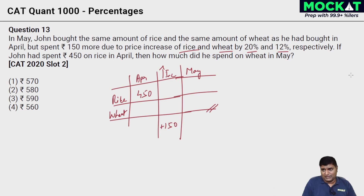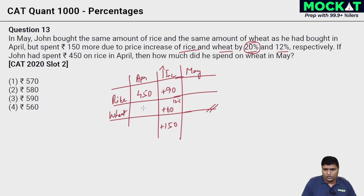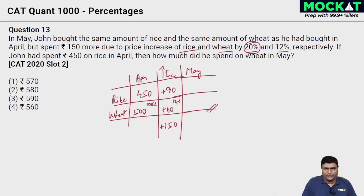The quantity remained the same — it's only because of the price increase. Rice went up by 20%, which is 1/5 of 450 = plus 90. The total increase is 150, so the wheat increase is 150 − 90 = 60. If 12% of wheat spending = 60, then 1% = 5, so the April wheat spending = 500. Therefore May wheat spending = 500 + 60 = 560. Option 4 is the answer.